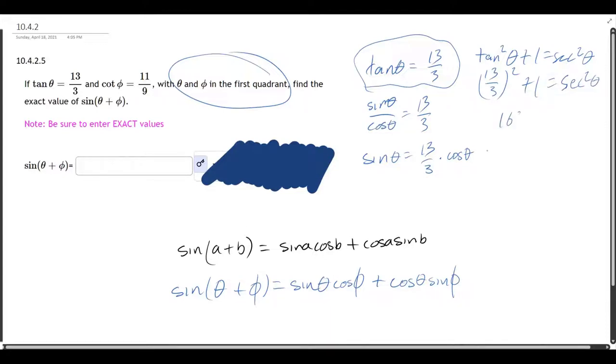13 squared is 169 over 9 plus 1. Common denominator, that's 178 ninths.